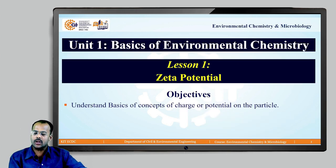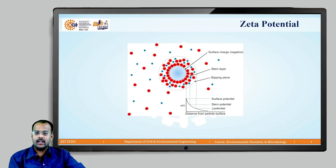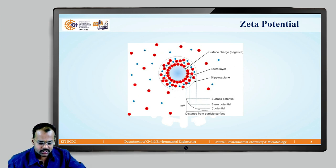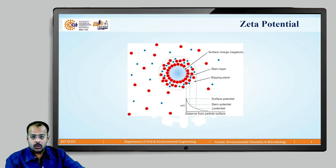By considering the objective, we are going to understand the basic concept of the charge or the potential on the particle. Let us have a glance towards the diagram. Here we can see that there is a bulk of the solution.